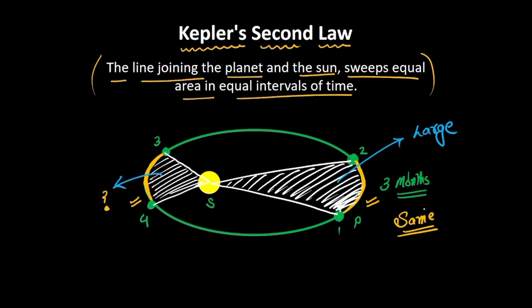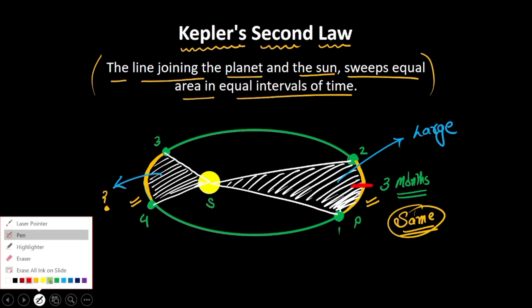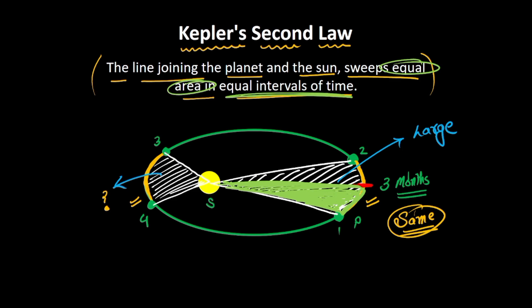Now that we know the planet is not moving at the same speed — it is much slower at the far extreme — we can rectify our earlier assumption. The planet travels a lesser distance at the far position. If we redraw the swept area at that position, it now seems fair that the planet could indeed be sweeping equal areas in equal intervals of time. But this only gives us an intuitive idea; we need to prove it mathematically.